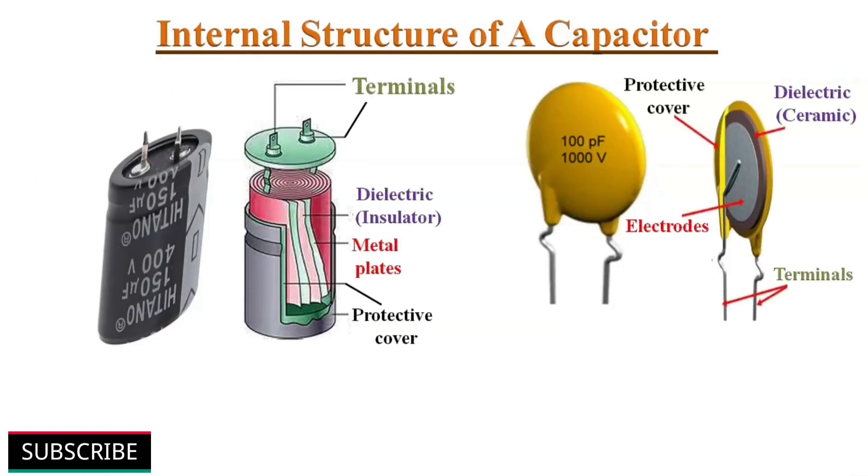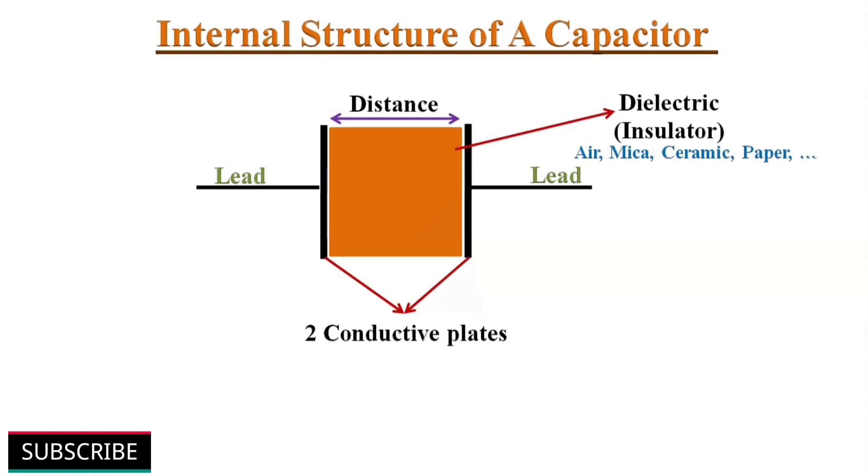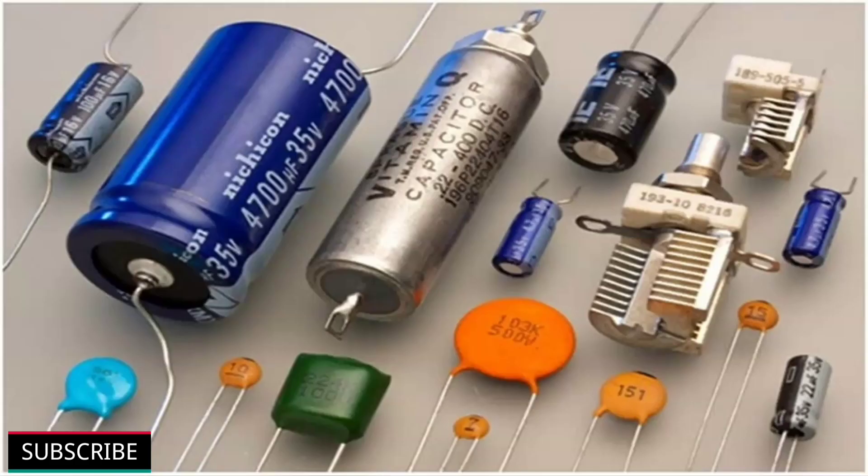Capacitors are manufactured in various types and shapes. The internal structure of a capacitor looks like this. It consists of two parallel conductive plates separated by some distance. The space between the conductors is filled with insulating medium called dielectric. Many capacitors got their names from the type of dielectric medium used inside it. For example, paper capacitor, ceramic capacitor, etc.